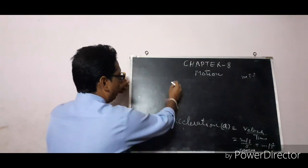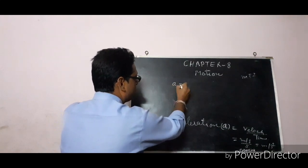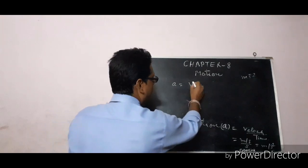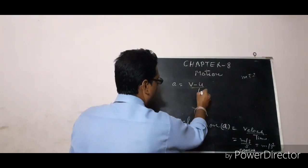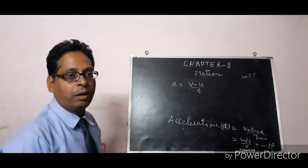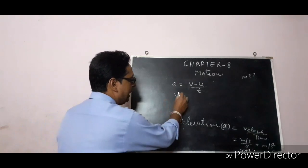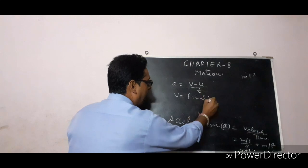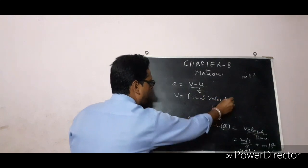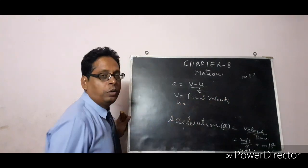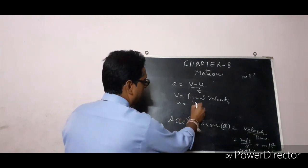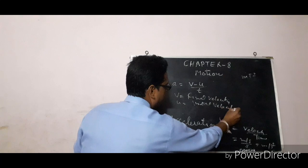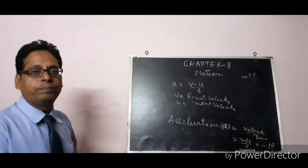The formula for acceleration is: acceleration equals change in velocity, which is V minus U, upon T — where V is the final velocity and U is the initial velocity.